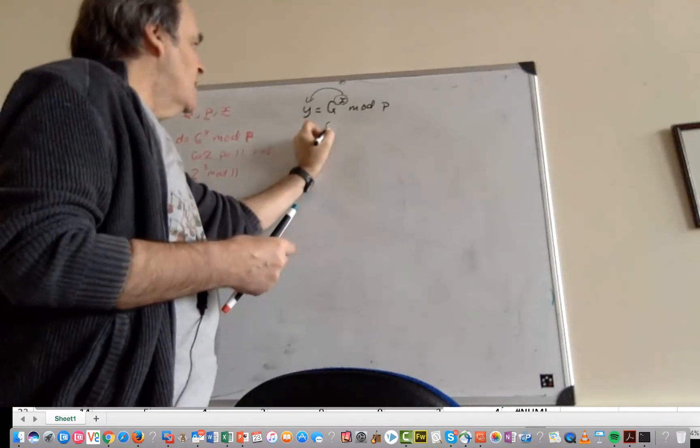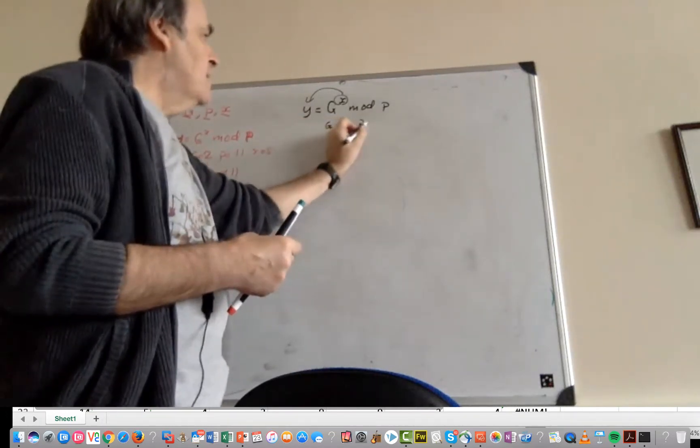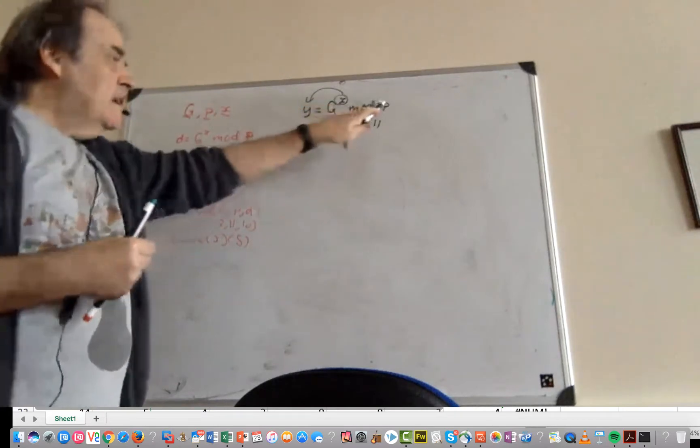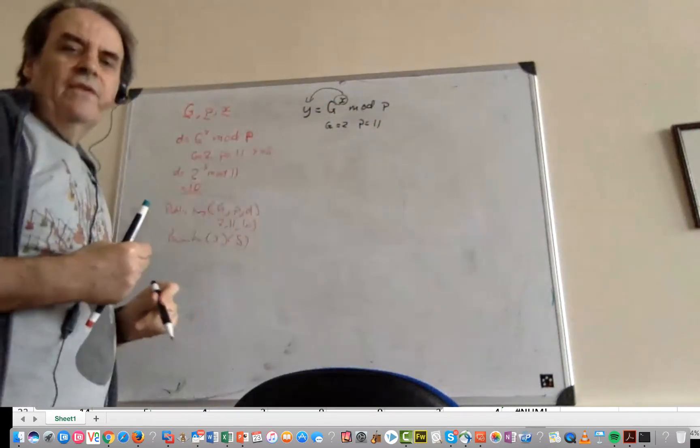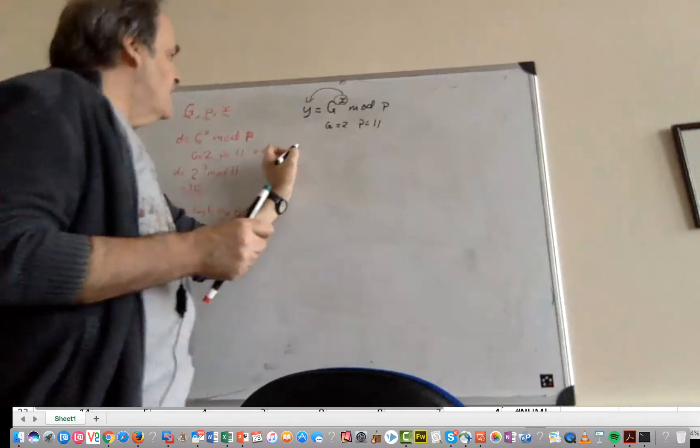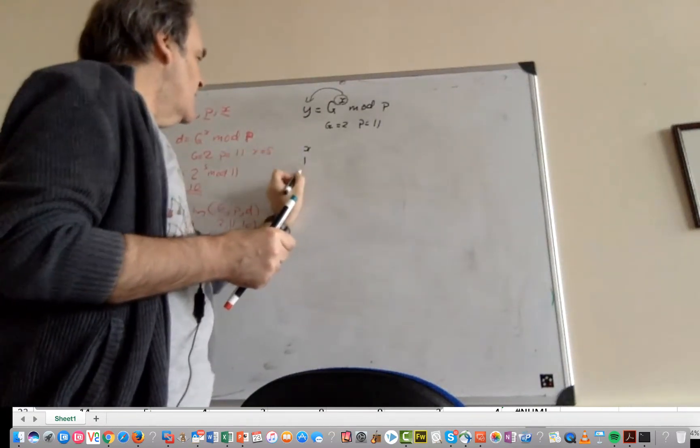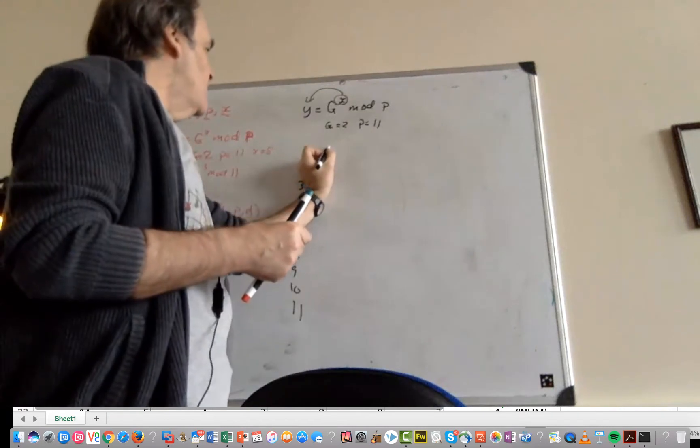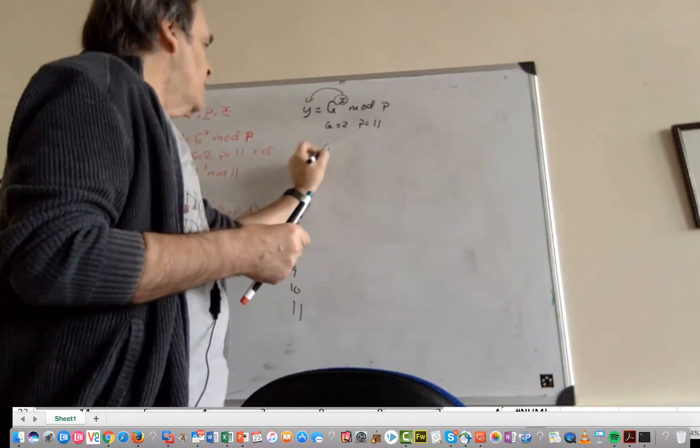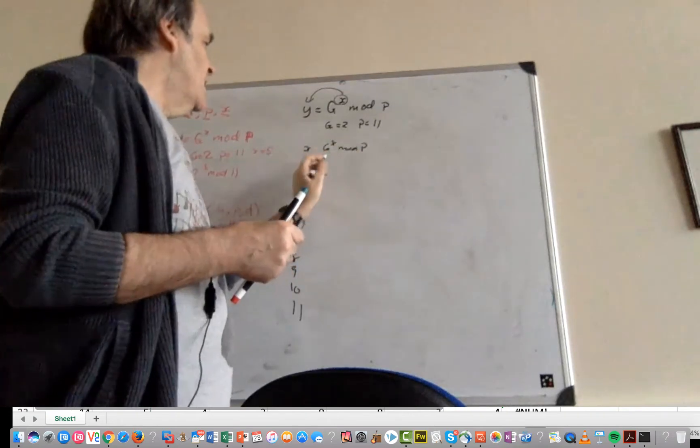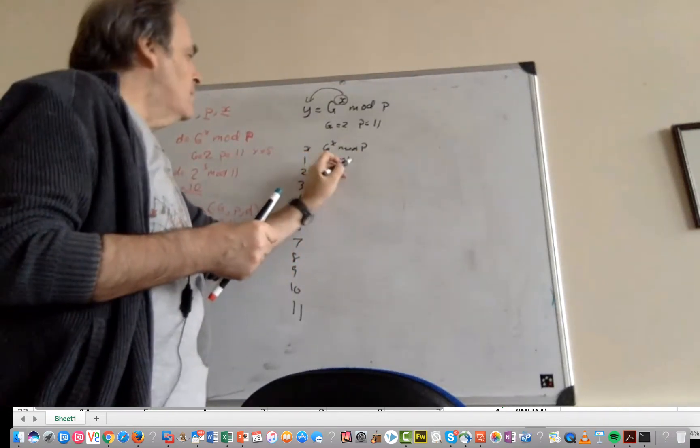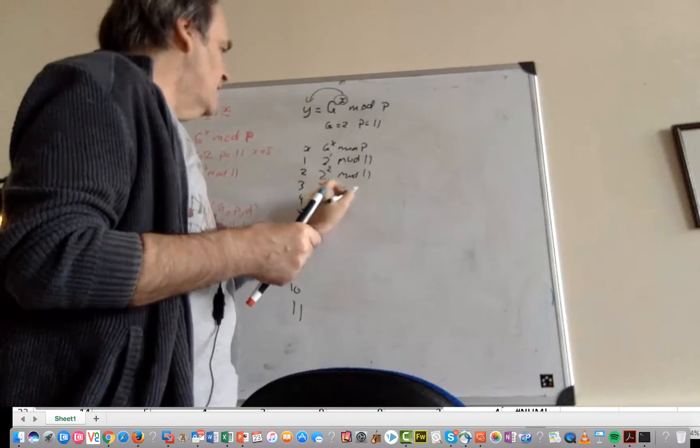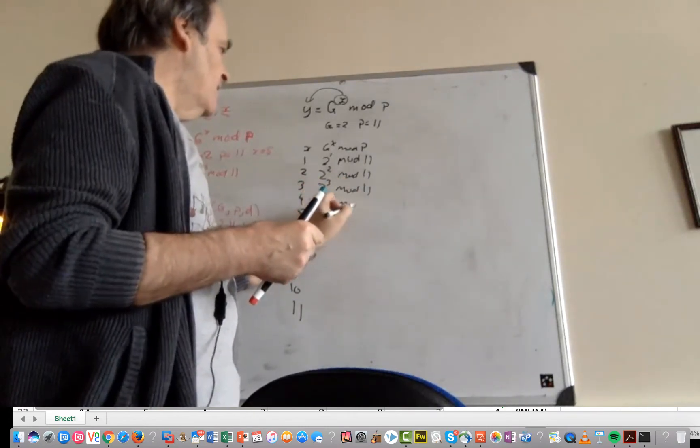Let's select G equals 2 and P equals 11. For every value of X up to P, we should get a unique value of Y. If we don't, it won't work. We'll map out X and calculate G to the power of X mod P. That's 2 to the power of 1 mod 11, 2 to the power of 2 mod 11, 2 to the power of 3 mod 11, 2 to the power of 4 mod 11.